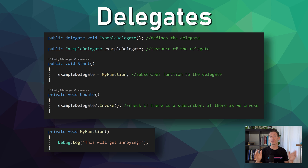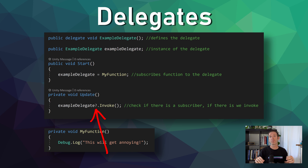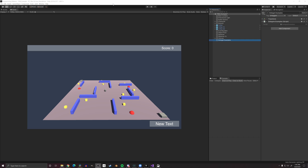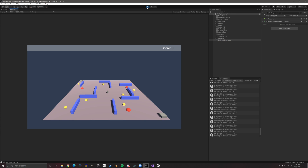The last step is to invoke the delegate. This line also checks if there are any subscribers — it's actually a null check, done by the question mark. The reason we need to do this is if a delegate is invoked and there are no subscribers, an error will get thrown. You could use an if statement to check if the delegate is null and then invoke it, but the shorthand syntax is pretty handy. If we attach the script to a game object and enter play mode, we can see the debug statement in the console and all is working as expected.